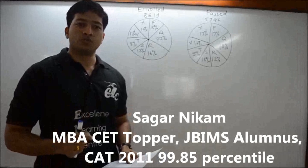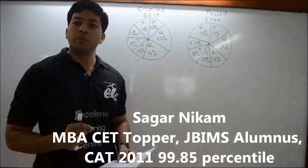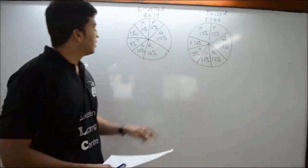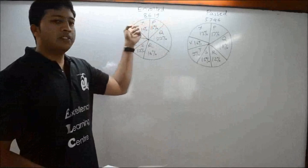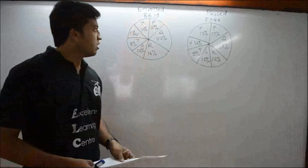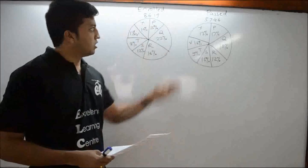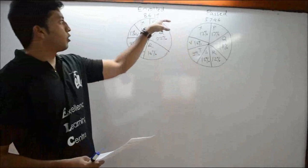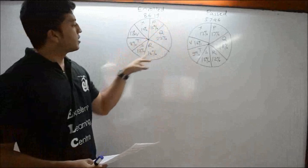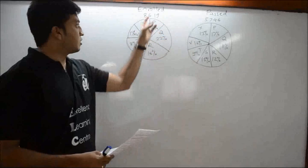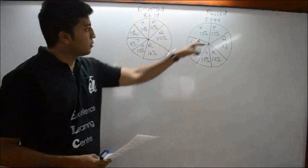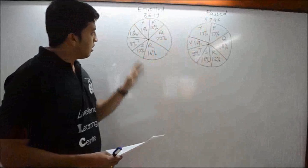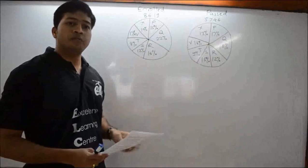We will see some speed techniques to solve DI questions in minimum time. We have taken the case of two pie charts. One pie chart shows the number of students enrolled from different institutes, and another shows the number of students passed from the same institutes. These are percentage shares of different institutes in enrollment and in passing.